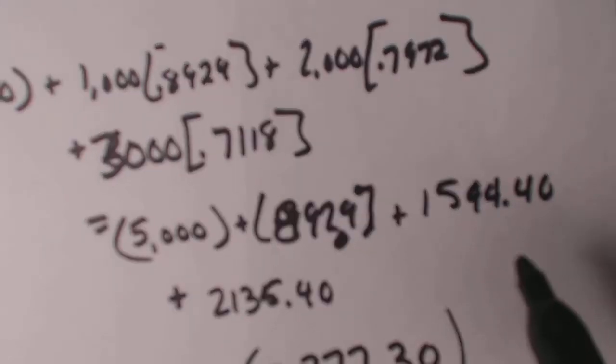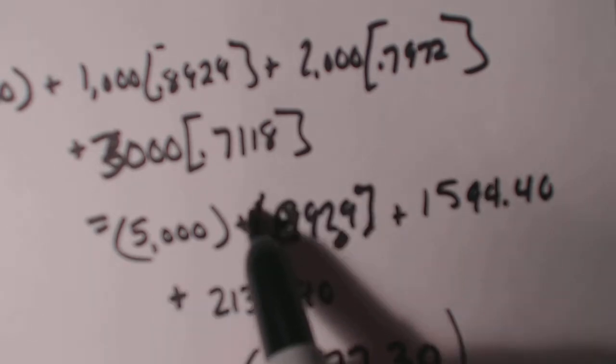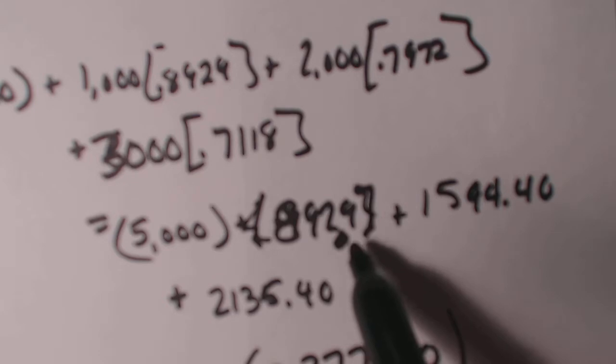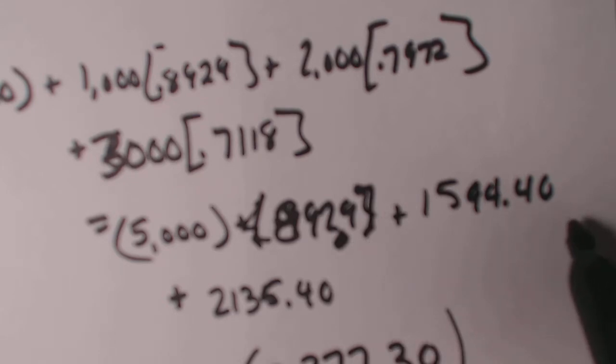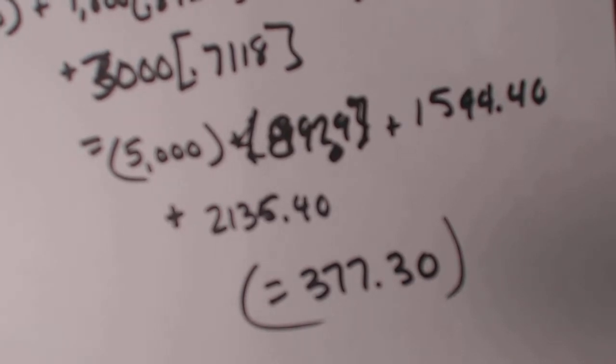And so then I just ran the equations and it was negative $5,000, plus 892.90, plus 1544.40, plus 2135.